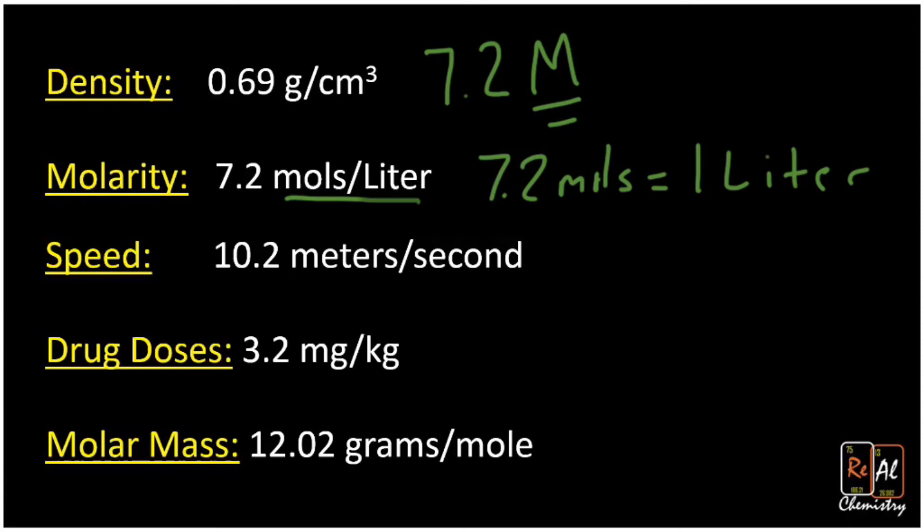And next we have a speed, a speed 10.2 meters per second, or we could have 60 miles per hour, whatever. The point there is there's two units and that speed will go between them. So we could write an equality and then use that as a conversion factor. 10.2 meters equals one second.